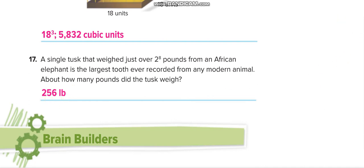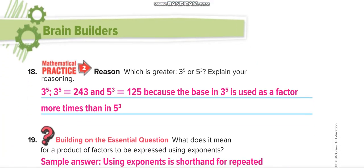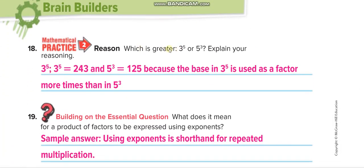Which is greater: 3 with power 5, or 5 with power 3? Try to solve it yourself first and then check. 3⁵ equals 243, and 5³ equals 125. So 3 with power 5 is greater.